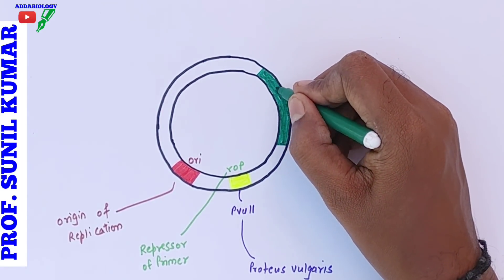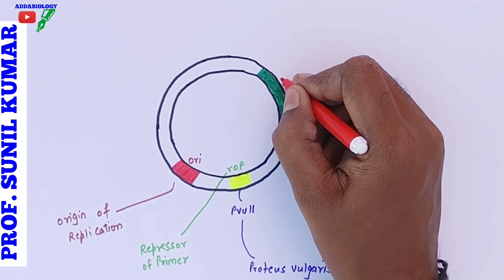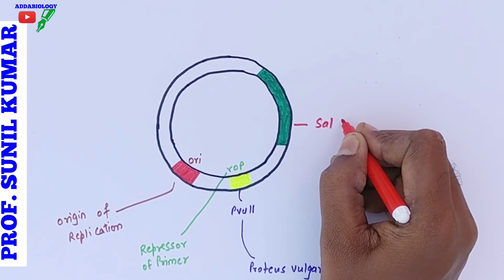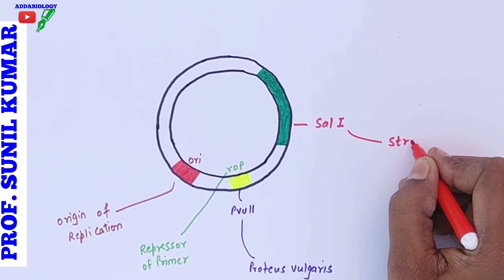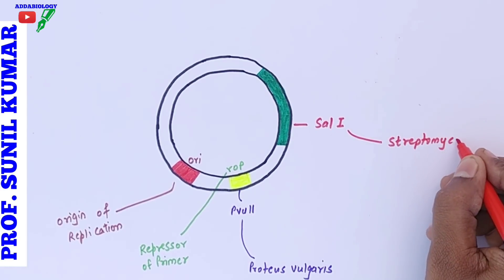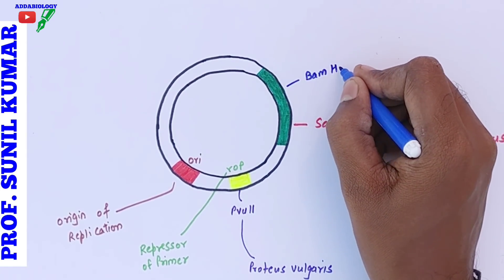This area that we are taking as a bigger green shaded region marks various enzymes. Here it stands for SalI. S stands for Streptomyces - that is the genus. L stands for albus - it becomes a species, and 1 is the order of discovery.